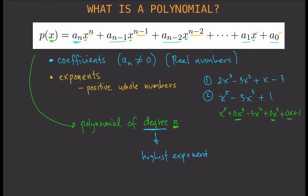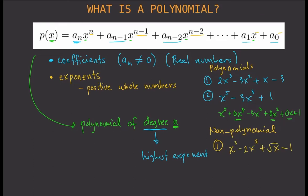Now examples of non-polynomials. For example: x³ - 2x² + √x - 1. If you look at the exponents, the first and second are positive, but if you look at the square root of x — we can rewrite √x as x to the power of one-half. The exponent for x is one-half, which is not a whole number. Therefore this is not a polynomial.